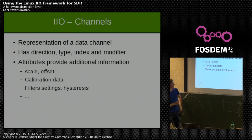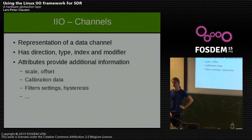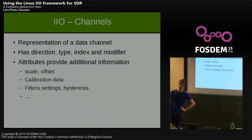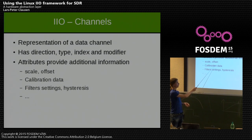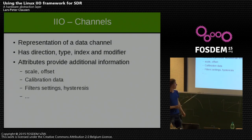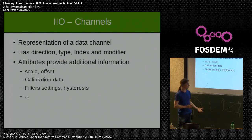There are standardized attributes such as scale and offset. The channel type also specifies the unit of the data — for new channel types we try to use SI units, but for legacy types like voltage we use microvolts. You don't want to convert every sample in the kernel driver, especially at high sample rates, so we provide scale and offset attributes to convert from the raw sample to a known unit. Beyond that, basically anything configurable in a channel can be an attribute: calibration data, filter settings, hysteresis, and so on.